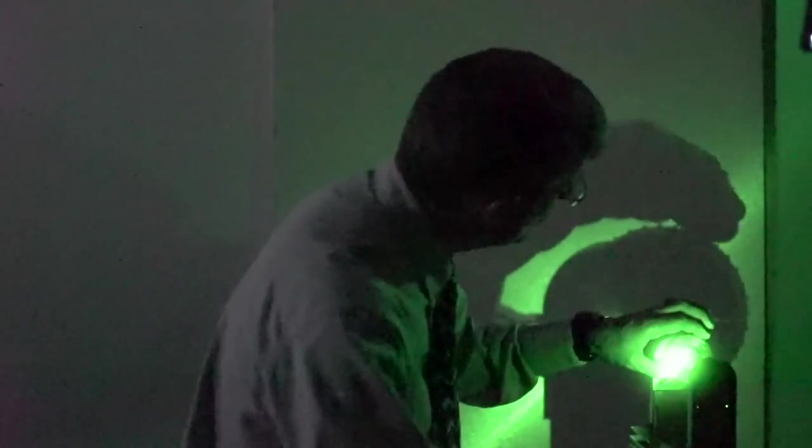So this is for a slit width of 0.02 millimeters. If we move to 0.04 millimeters, what you see is a pattern that's tighter with bright spots that are less wide. So as we increase the slit width, this is 0.08, the pattern gets even tighter. And then we're 0.16, a pattern that's very, very tight.